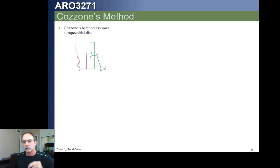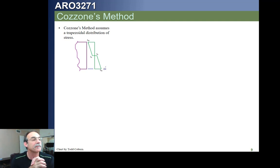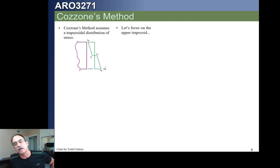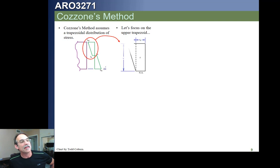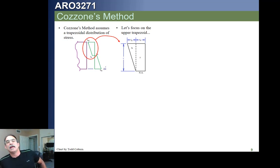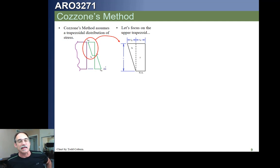Let's focus on what this trapezoidal distribution looks like. We can see the trapezoidal distribution on the section, and we're going to look at how that moment develops — how to compute that moment. Let's take everything above the neutral axis and focus on that little trapezoid. We can idealize it as two shapes: a rectangular shape and a triangular or bending shape, with subscripts R and B.